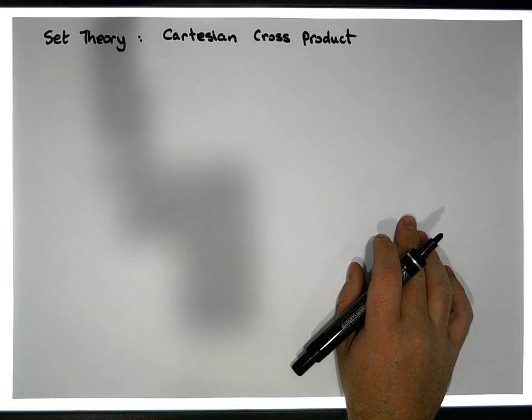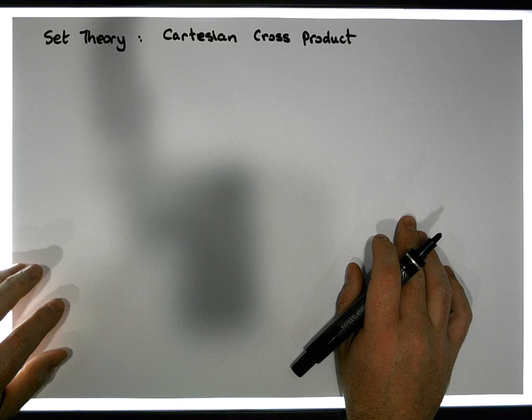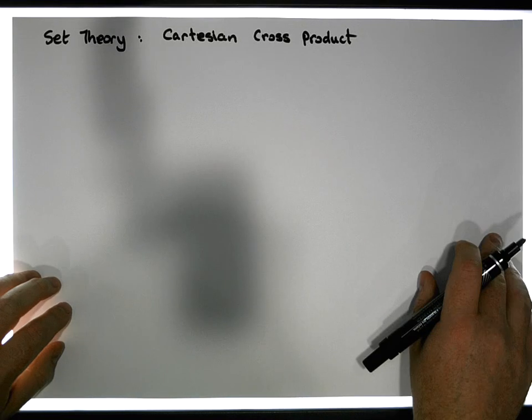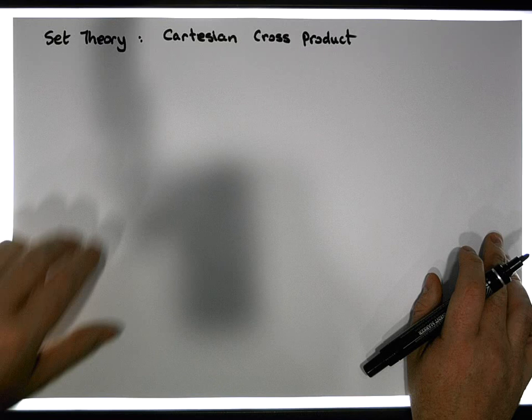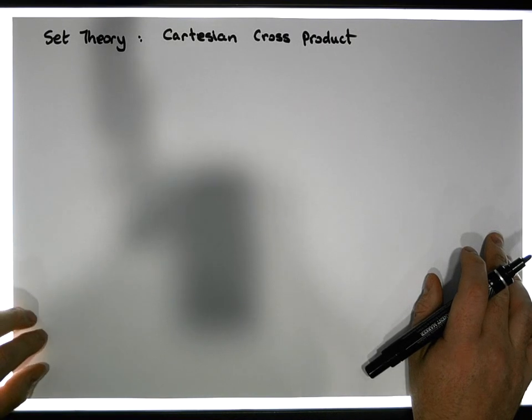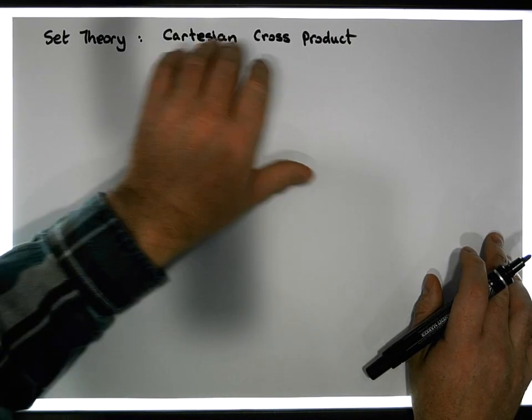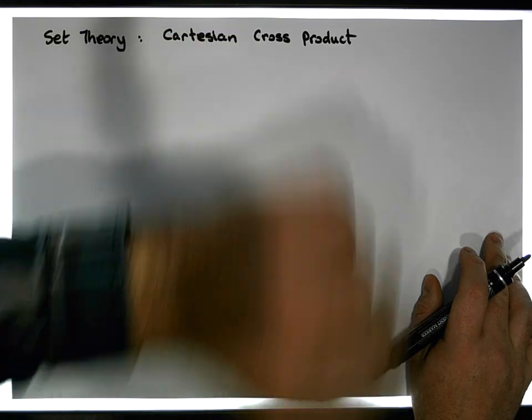Hi guys, this is Jonathan Lambert with the Mathematics Development and Support Service at the National College of Ireland. This short video, another video in our series dealing with set theory, is going to look at another important type of set, a set that's known as the Cartesian cross product or just the cross product.